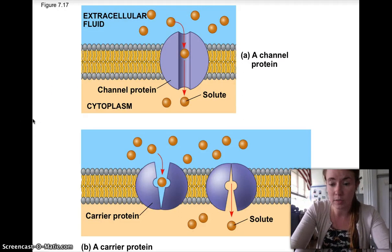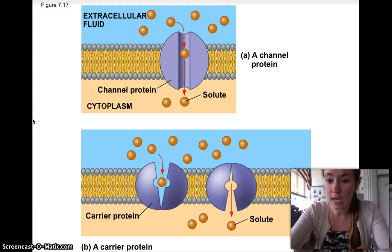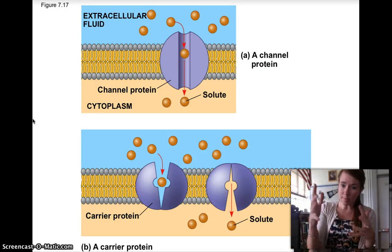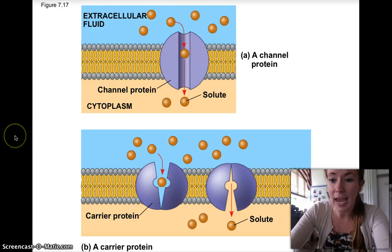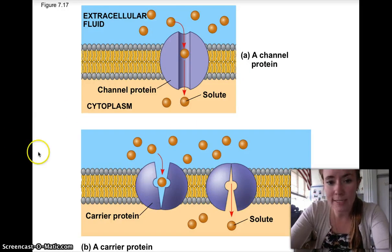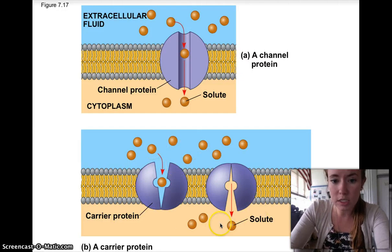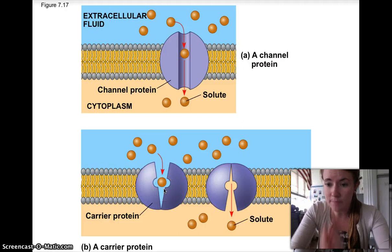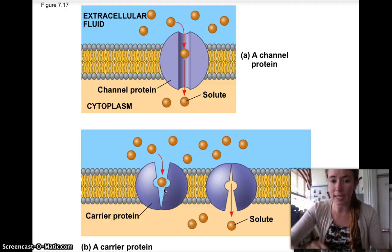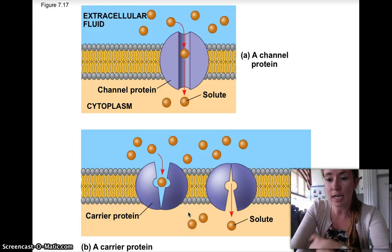Then we have carrier proteins, and these ones are a little different. These actually change shape and grab something from one side of the membrane, change shape, and put it on the other side — they carry it across. For example, this orange solute is moving from high concentration to low concentration. It goes into the middle, the carrier protein grabs onto it, and then opens up and lets it out the other way. So it's not just a straight open channel — it actually has to move it.